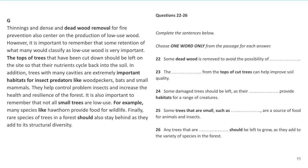For question 25, 'some trees that are small, such as something, are a source of food for animals and insects,' the phrase 'such as' gives you the answer straight away. We're looking for an example of a tree. In the text it says 'many species like hawthorn provide food for wildlife.' The synonym for 'such as' is 'like,' so the answer is 'hawthorn' — H-A-W-T-H-O-R-N. It doesn't matter if you don't know it. Just follow the sentence word order and you'll find it using the synonym connection.